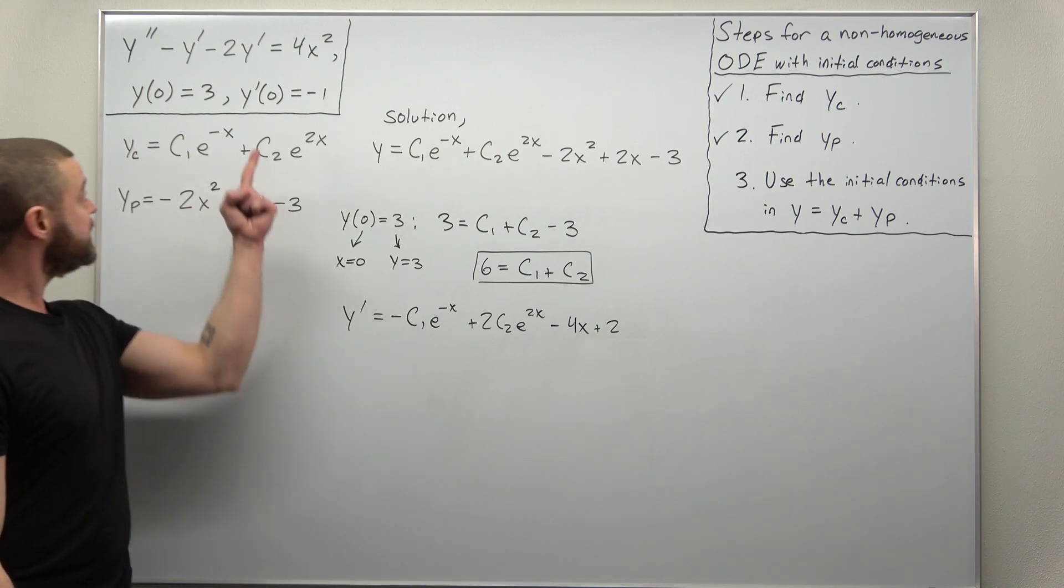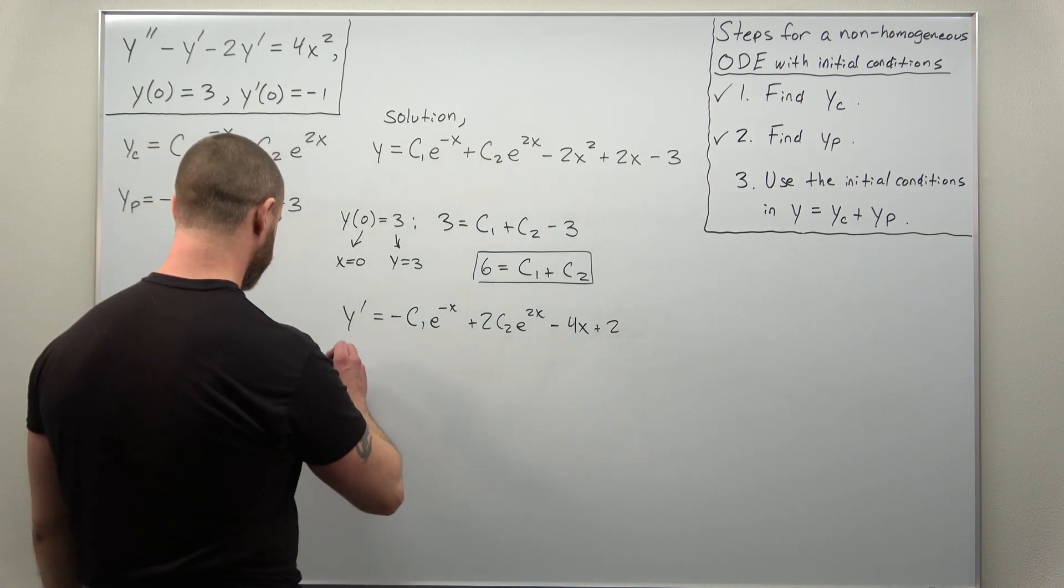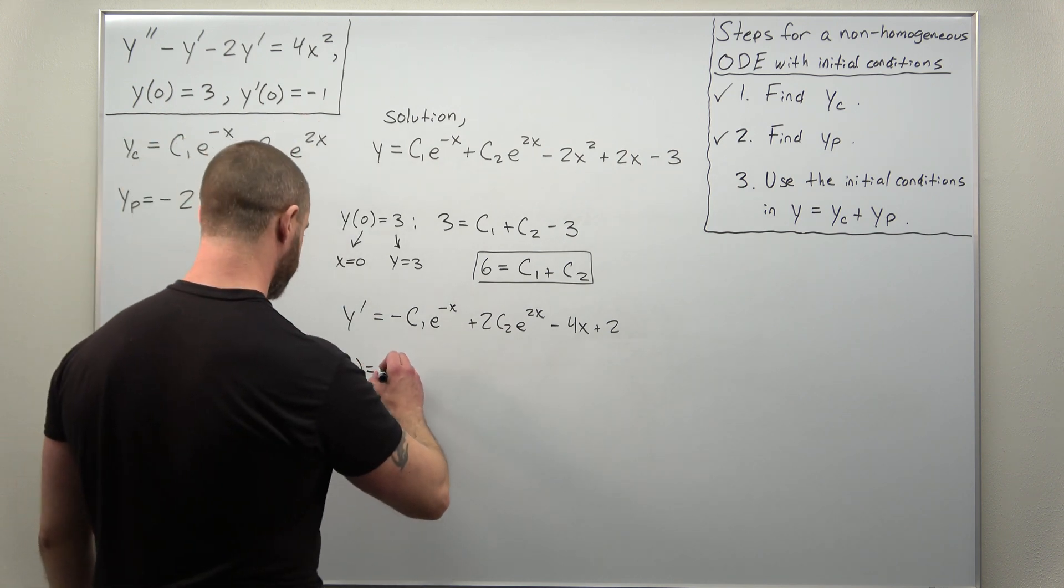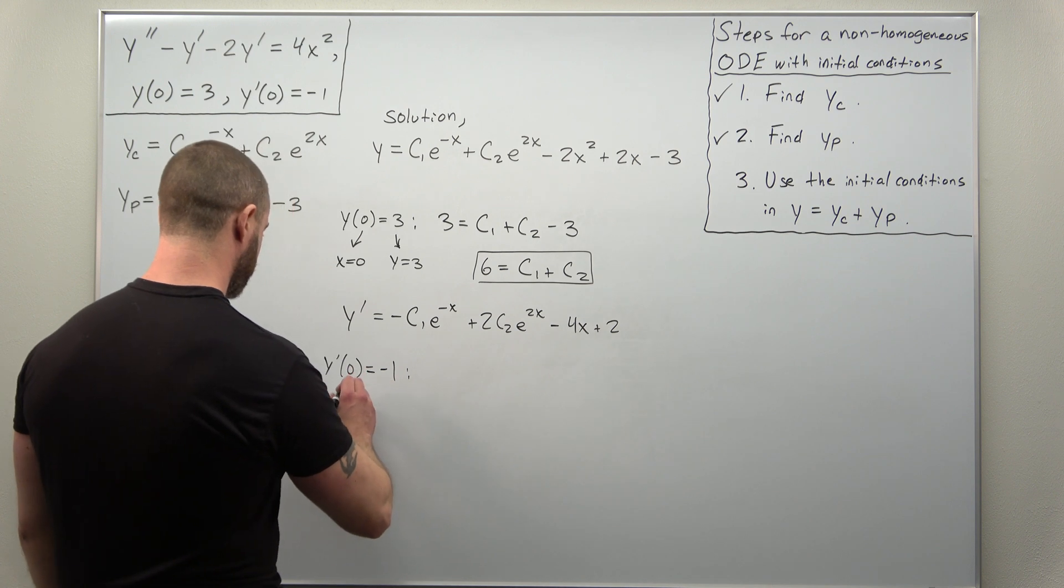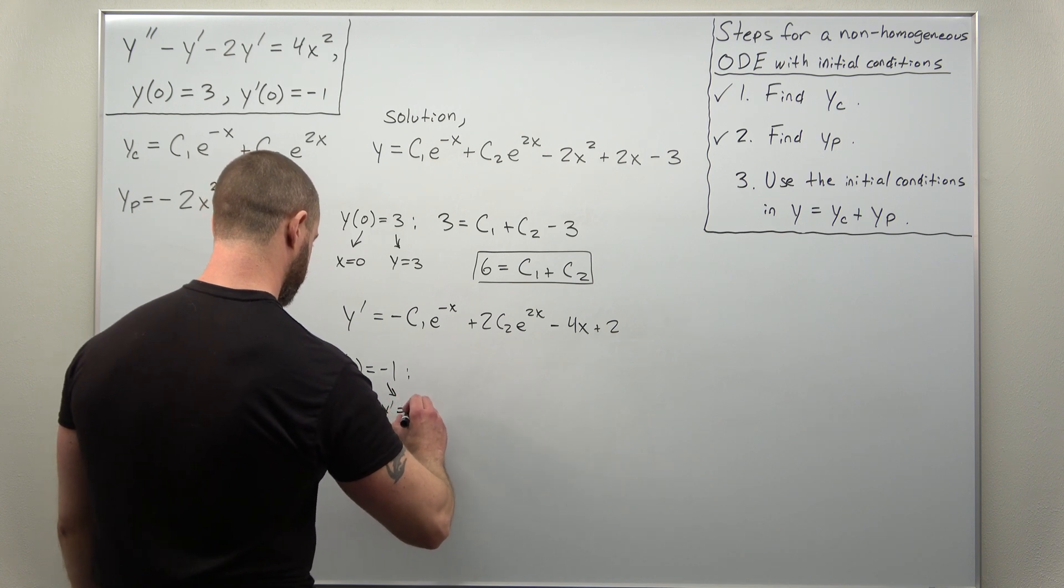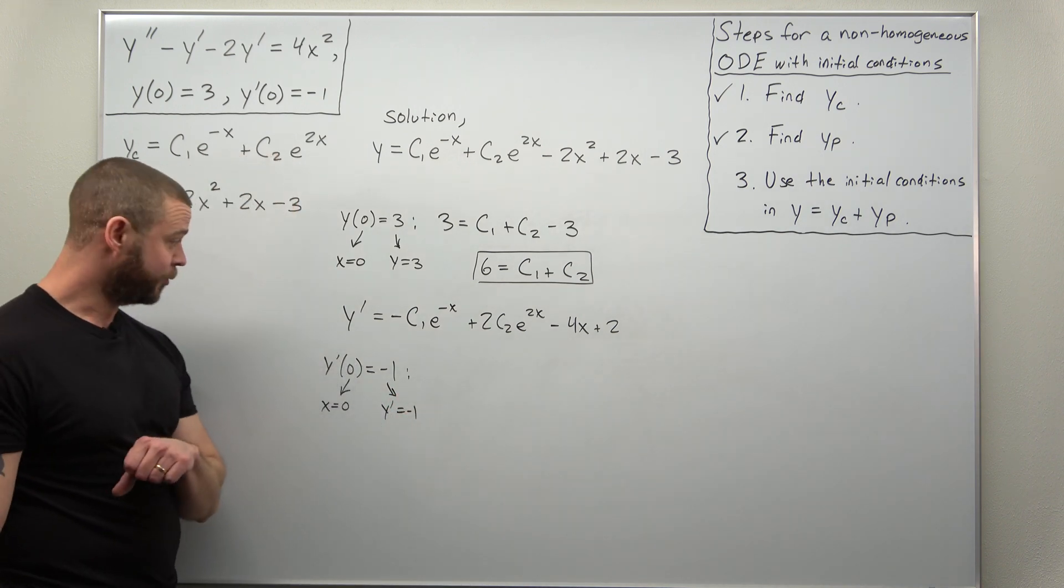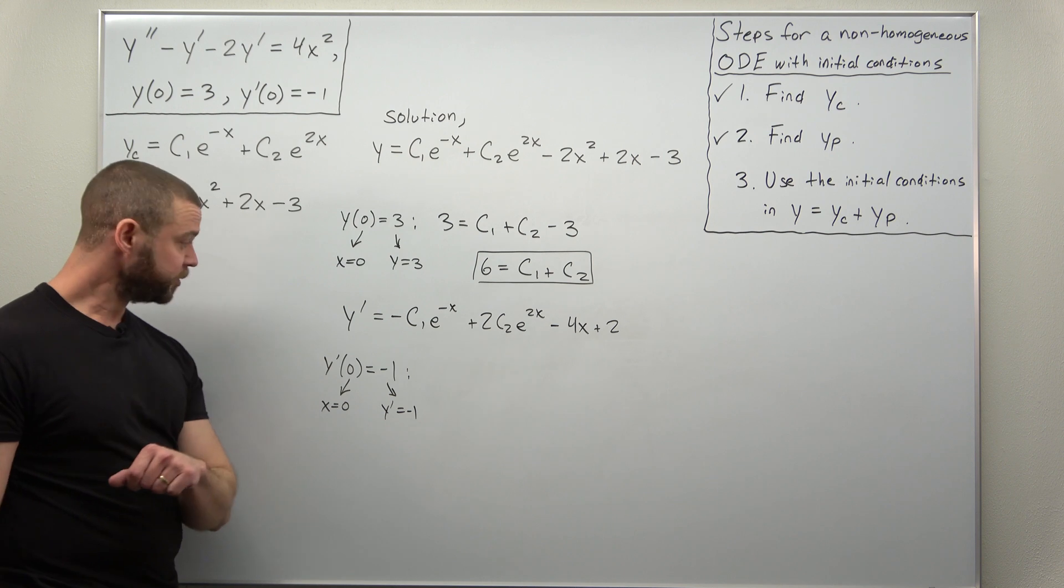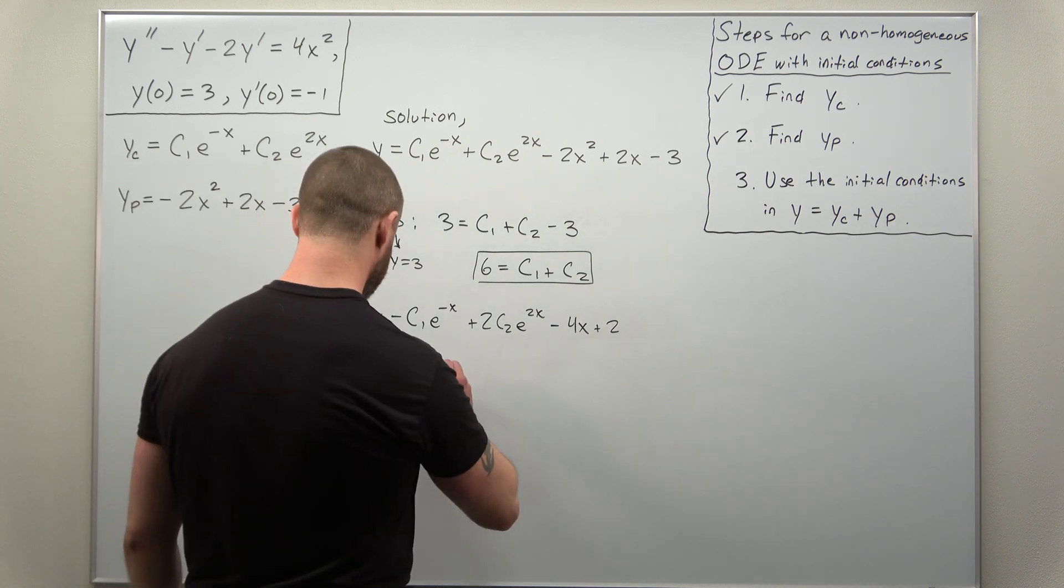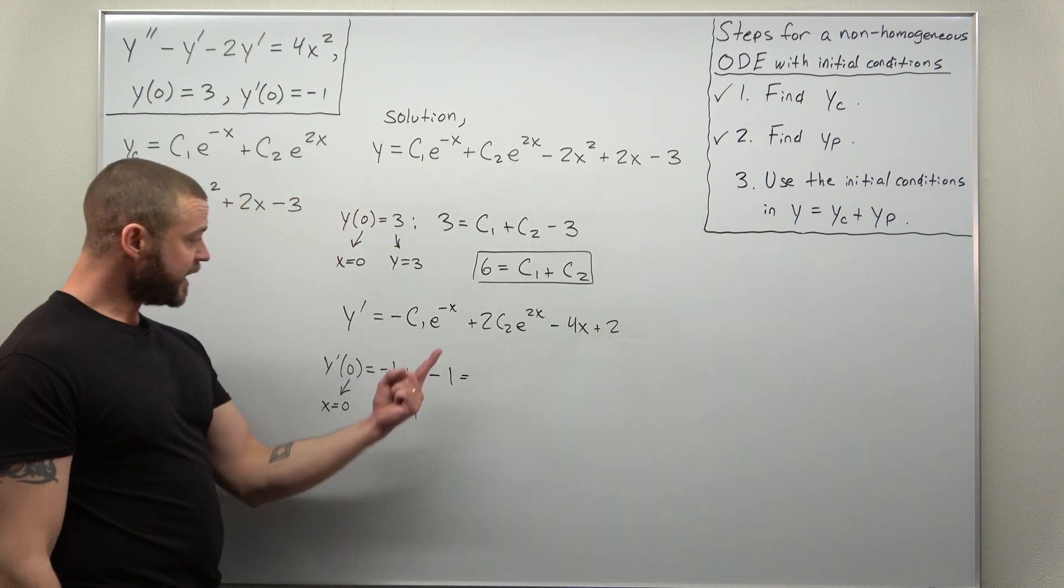Now we can plug in our derivative initial condition. Y prime of zero equals negative one. And again, that's telling us the X value is zero. And your derivative value is negative one. Plug it in. Your left side becomes negative one.